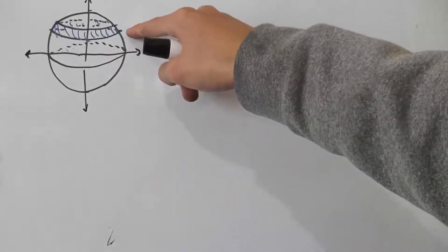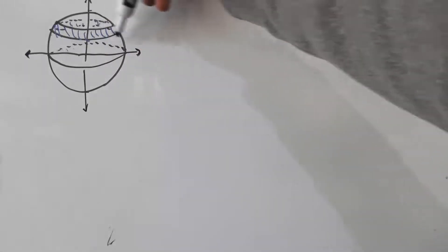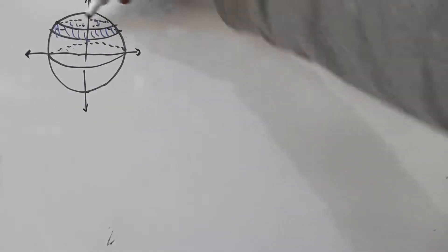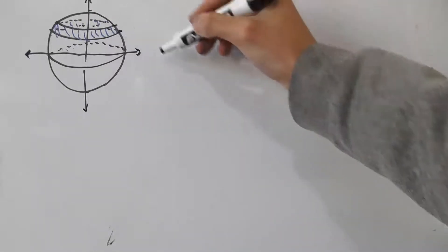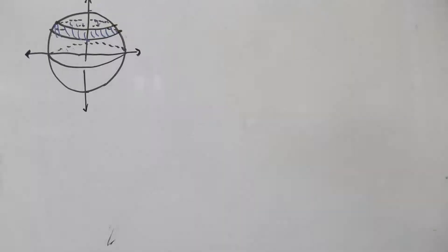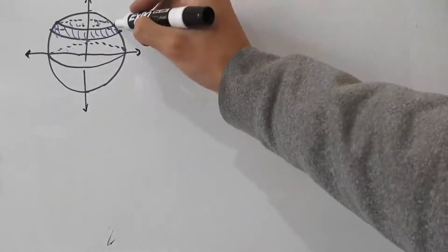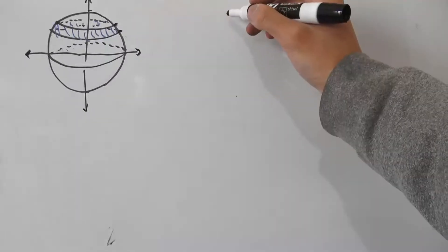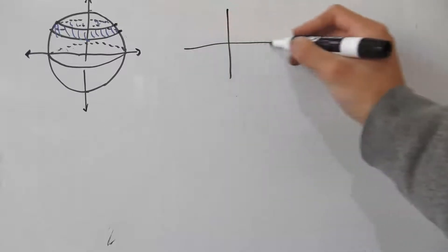To find the area of each of these little slithers here, you need to find the circumference and this little width here. The circumference is going to be quite straightforward after we do this step, but the more important thing is how we can represent this little width here. We're going to be using the unit circle for this.